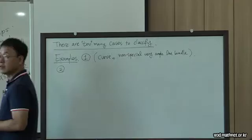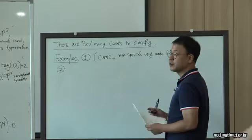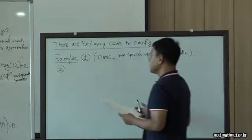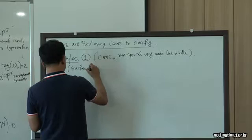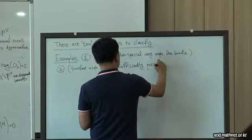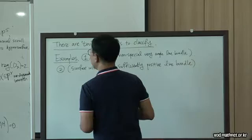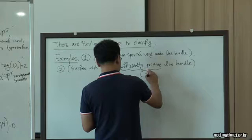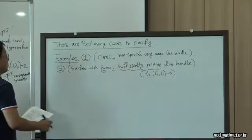This vanishing implies that the base should be rational. The third example: any smooth projective surface with p_g equal to zero and a sufficiently ample line bundle. This sufficiently positive condition means the first cohomology vanishes.